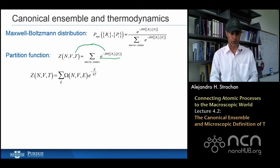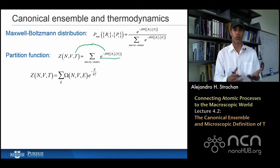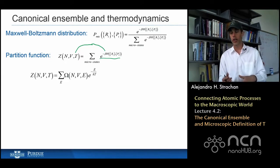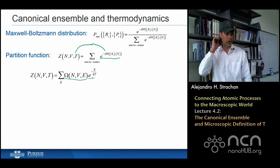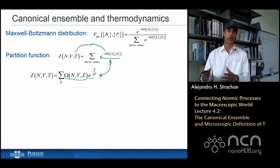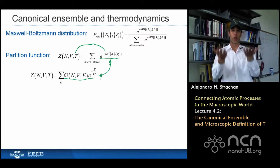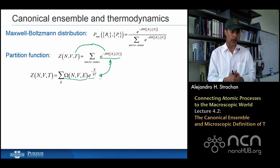The number of states with a given energy is omega. So the partition function can be written as a sum — or integral — over energies of the number of states with that energy times the Maxwell-Boltzmann weight. Instead of summing over all microscopic states, I group states by energy and sum over energies, with omega telling me how many states I have at that energy.